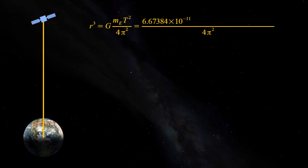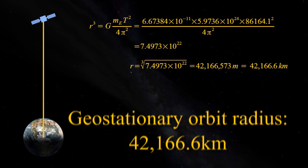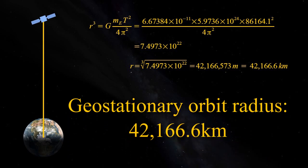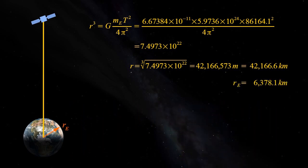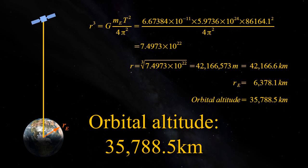We know the universal gravitational constant, we know the mass of Earth, and we know the orbital period t in seconds. Plug those in and take the cube root, and we get an orbital radius of 42,166.6 km. The equatorial radius of the Earth is 6,378.1 km. Subtract that and the orbital altitude above the equator comes out as 35,788.5 km.